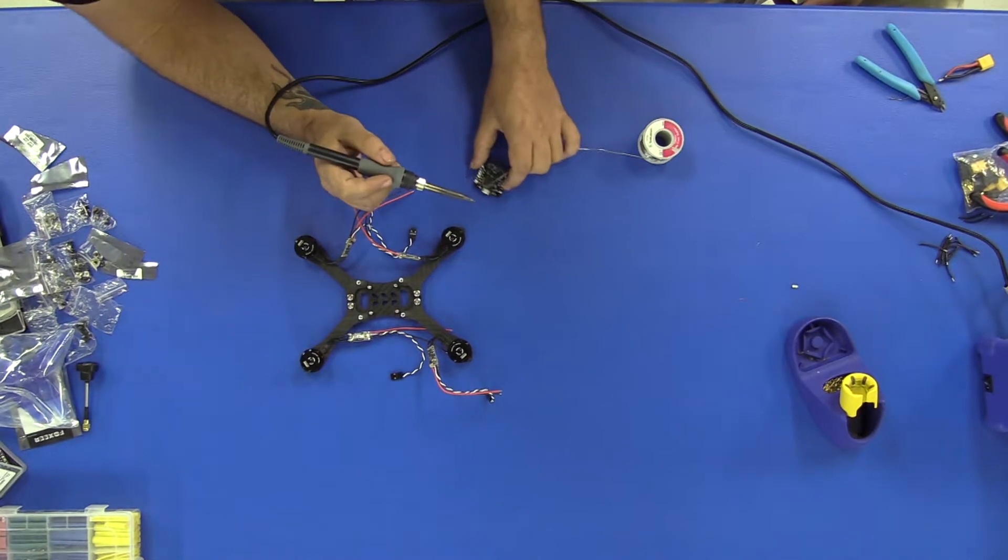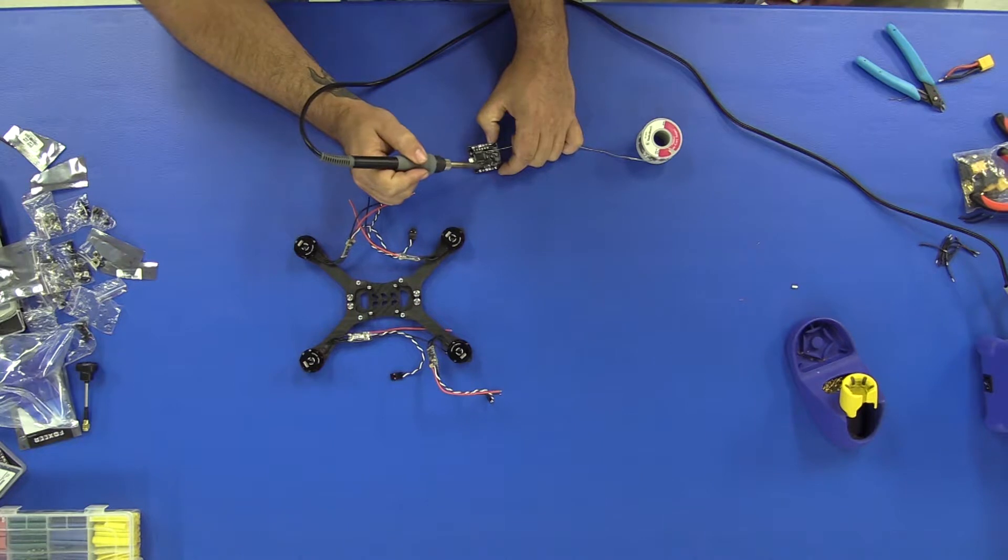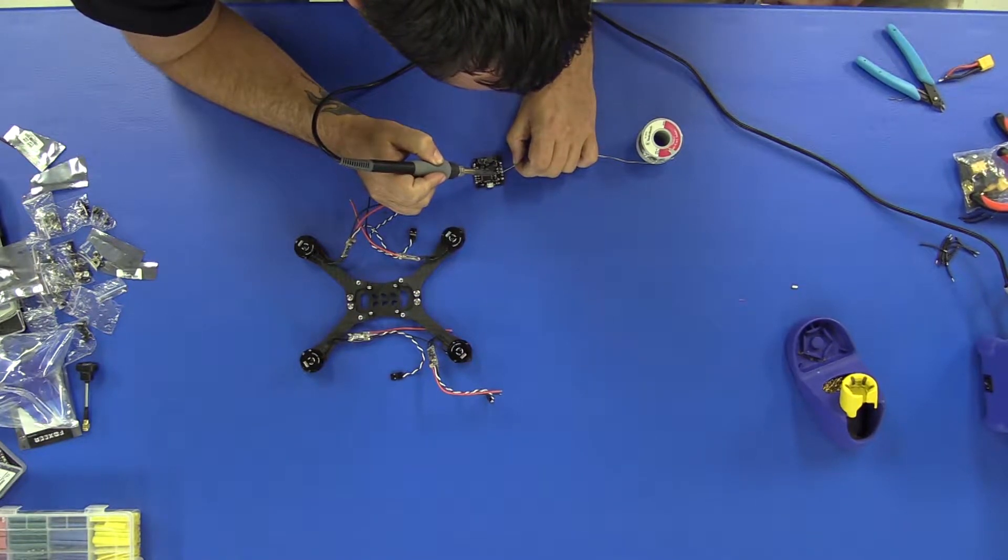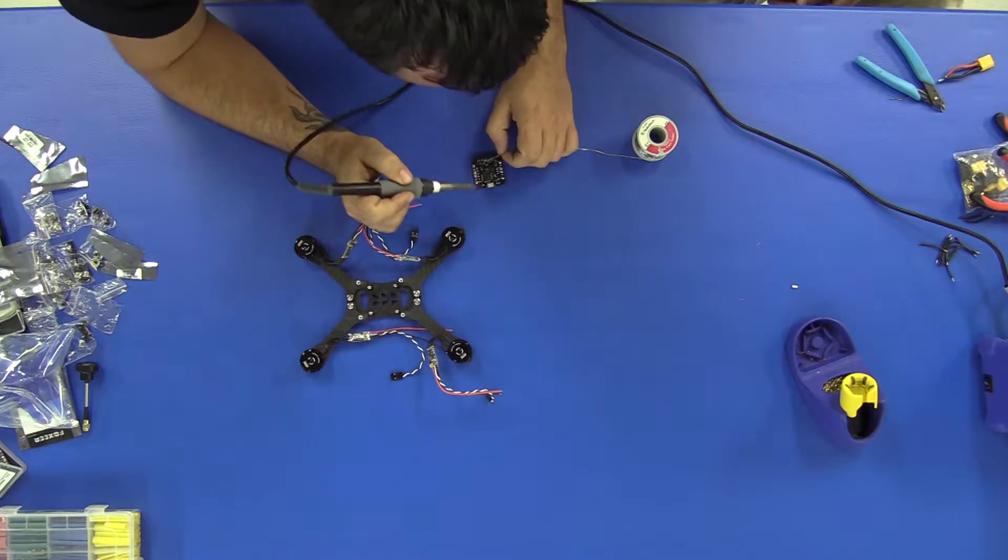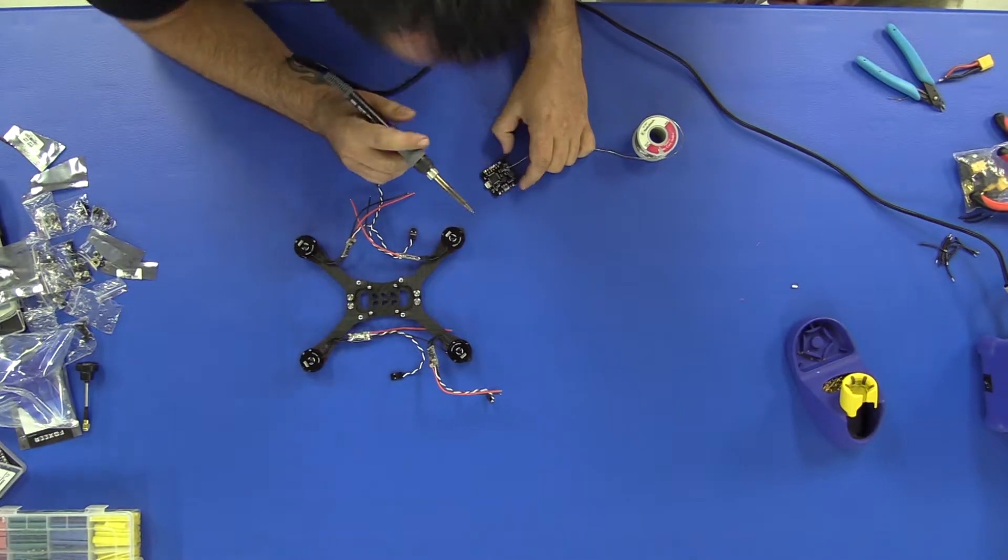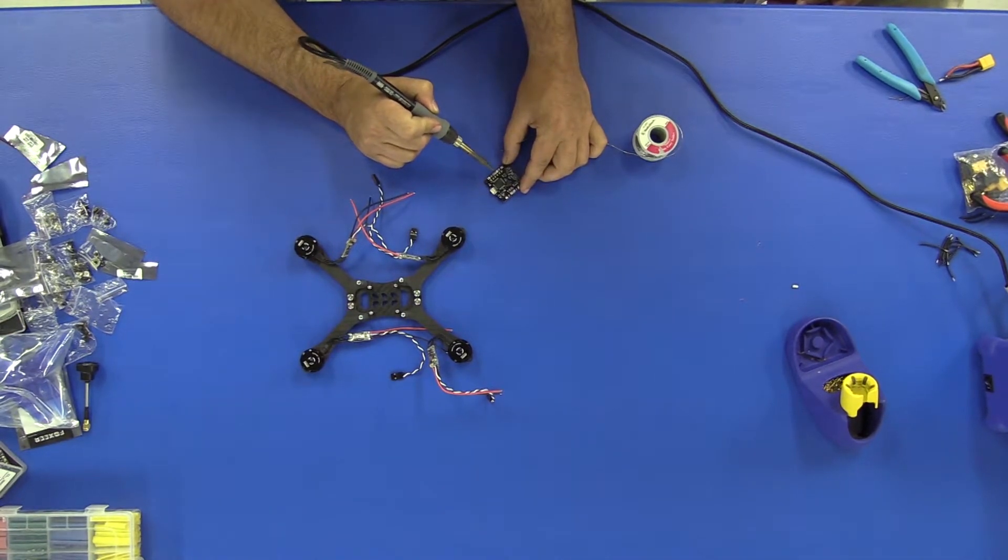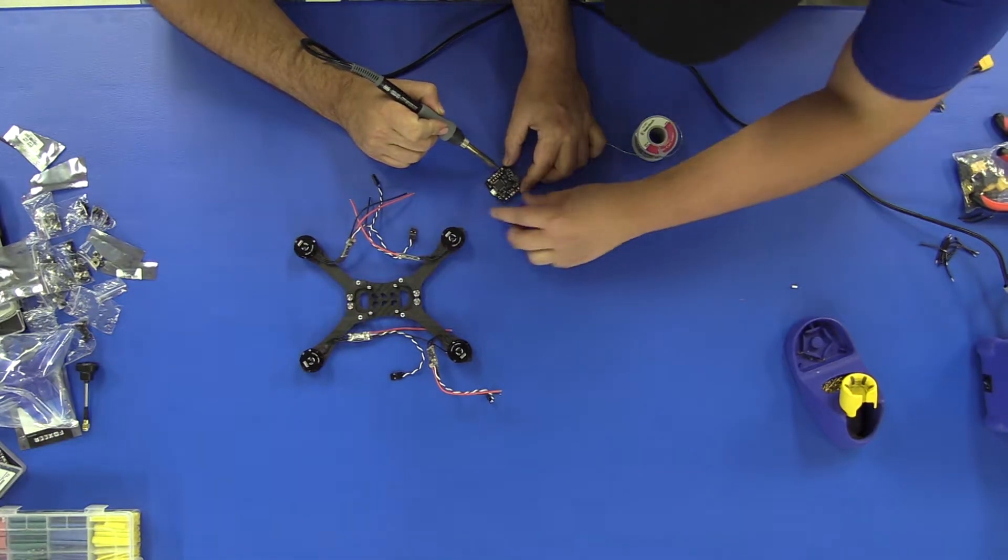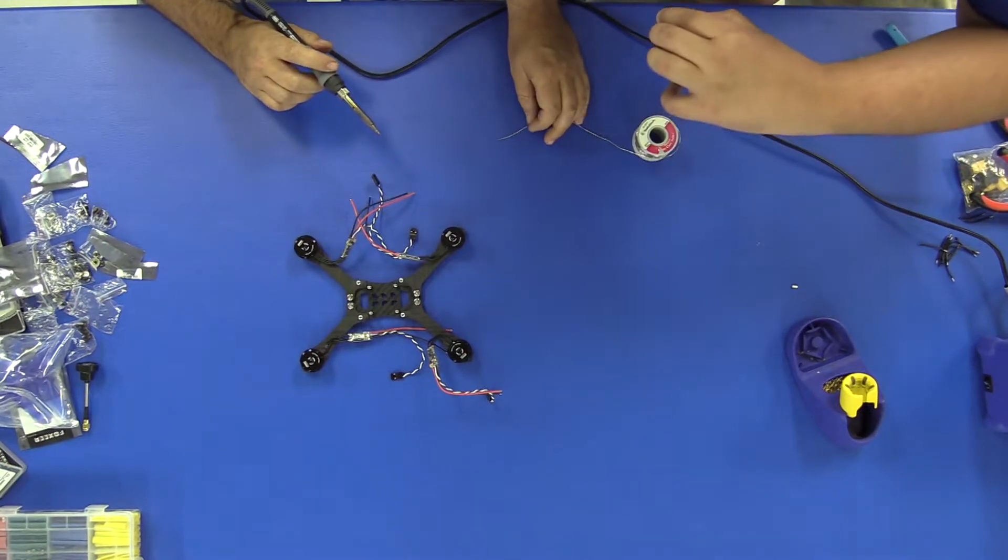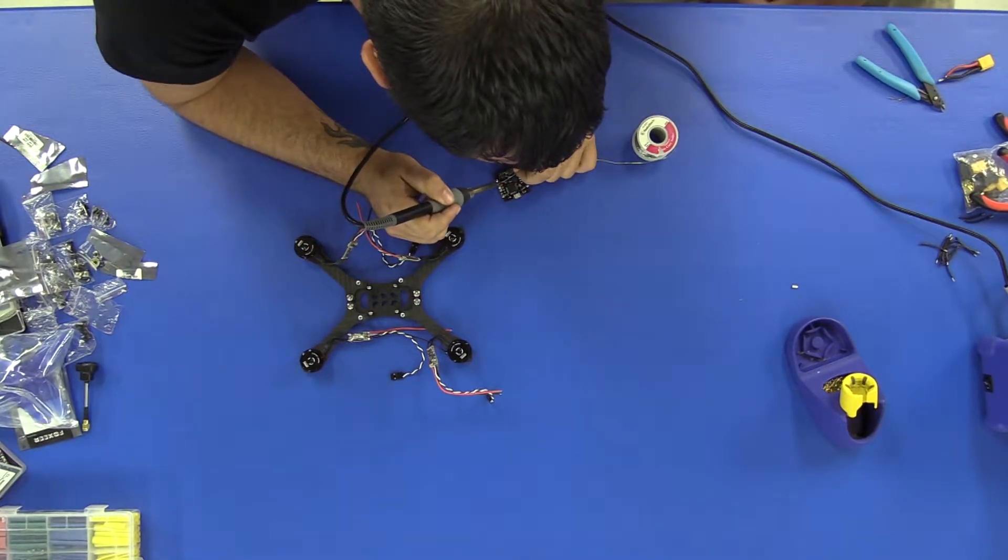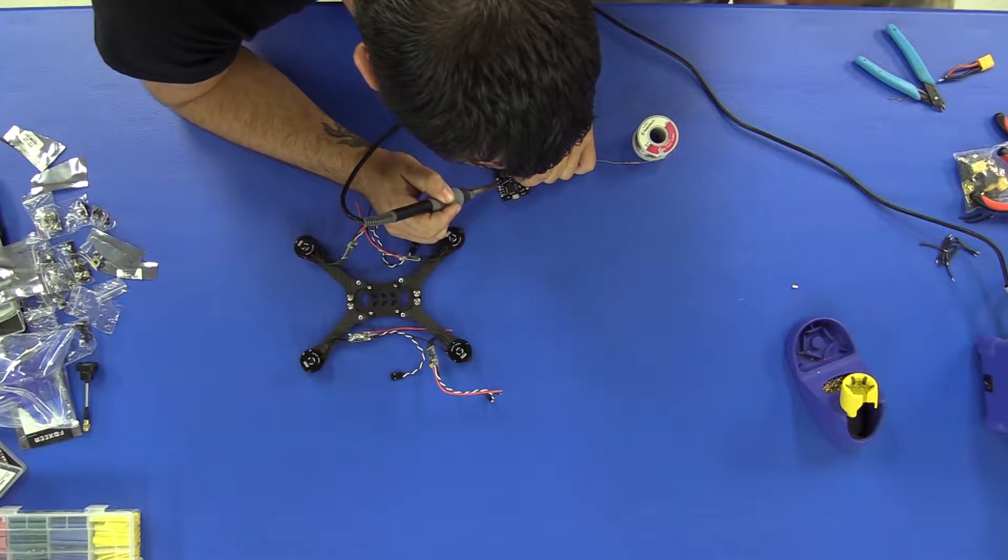Our camera wires are up here—there's three pads right here. We want to go ahead and tin those as well. On the back of the board, we're going to use the three pads on the left. That's going to be your VTX signal, VTX power, and VTX ground. The VTX is the video transmitter—it takes the signal from the camera and transmits it to your goggles.